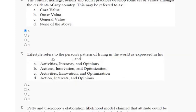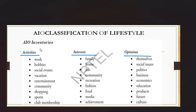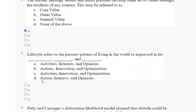Question number 7: lifestyle refers to a person's pattern of living in the world as expressed in his dash, dash, and dash — activities, interests and opinions; second, action, innovation and optimization; third, activities, innovation and optimization; or action, interest and opinion. The explanation is: AIO inventory stands for Activities, Interest and Opinion. So the correct answer for question number 7 is option number A.